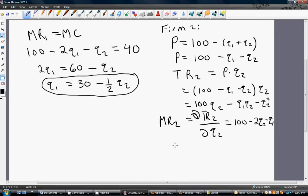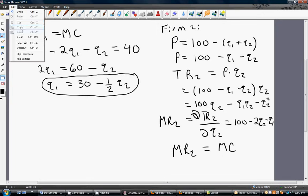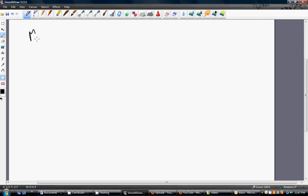Let me go on to the next page. But what we're going to do on the next page is just simply set marginal revenue for firm 2 equal to marginal cost. And doing that, we get the following result. And this will simplify nicely to something that looks like this.